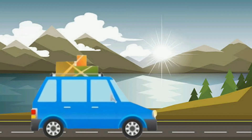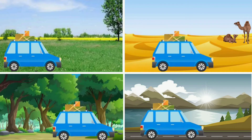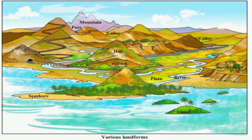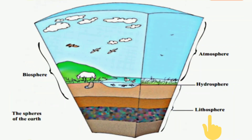Some lands are covered with crops or forests, and some lands are covered with mountains. We can see various shapes of land, like mountains, hills, valleys, plains, plateaus, etc. All these different shapes of land are called landforms.